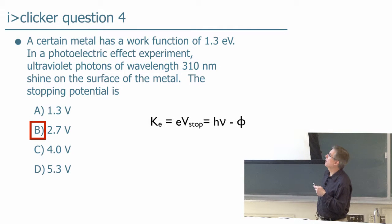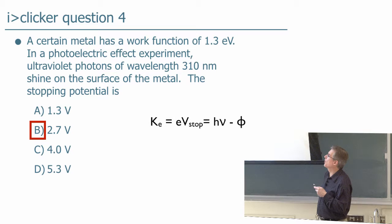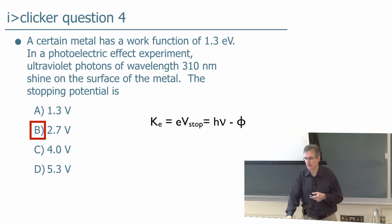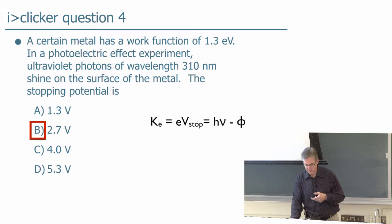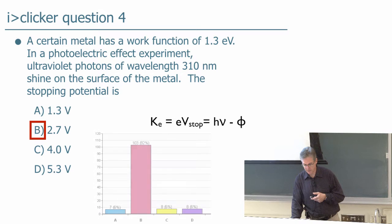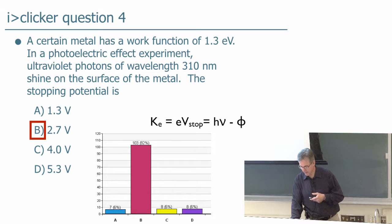Correct answer. 1240 eV nanometers divided by 310 is 4, minus the 1.3 is 2.7 electron volts, and so you need 2.7 volts to stop a 2.7 electron volt. Yes, 82% of you following along.